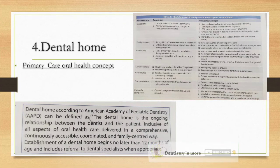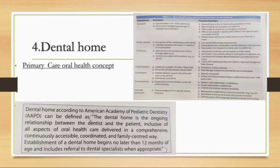The concept of a dental home is defined by the American Academy of Pediatric Dentistry as the ongoing relationship between the dentist and the patient, inclusive of all aspects of oral health care delivered in a comprehensive, continuously accessible, coordinated, and family-centered way. Establishment of a dental home begins no later than 12 months of age and includes referral to dental specialists when appropriate. Its ideal characteristics include being accessible, family-centered, continuous, comprehensive, coordinated, compassionate, and culturally competent.